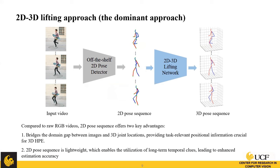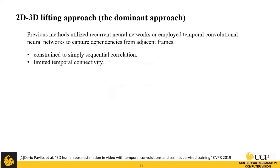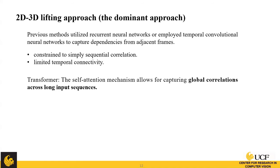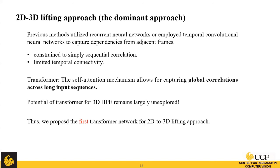For example, current state-of-the-art methods can use more than 300 frames as input. Previous methods utilized recurrent neural networks or temporal convolutional networks to capture dependencies from adjacent frames. However, they are constrained to sequential correlations or have limited temporal connectivity. The transformer's self-attention mechanism allows capturing global correlations across long input sequences, and its potential for 3D HPE was largely unexplored at that time. Thus, we propose the first transformer network for the 2D-to-3D lifting approach.